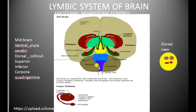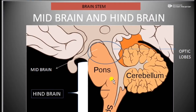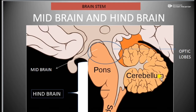The hindbrain consists of three structures: pons, cerebellum, and medulla oblongata. Pons Varolii is present below the midbrain. It acts as a relay station between the two lobes of the cerebellum, the spinal cord, and the rest of the brain. In Latin, pons means bridge.